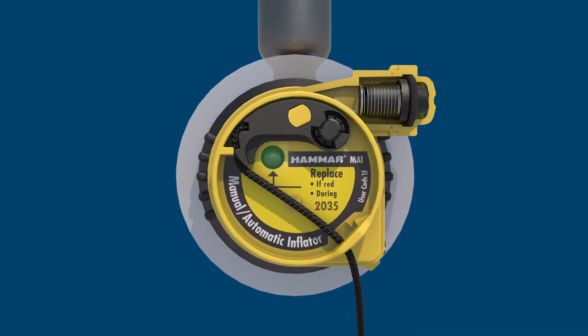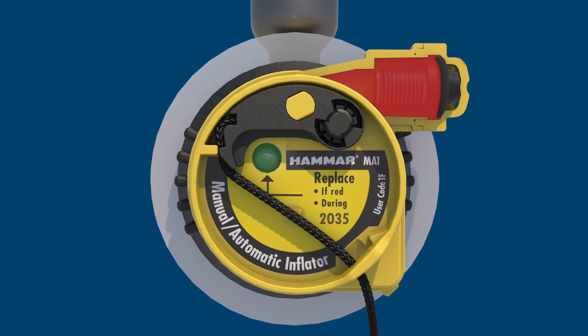Some air will always remain in a life jacket's bladder even after vacuum packing. When the life jacket is submerged, if the air pressure inside the bladder and the MA1's hydrostatic valve is equivalent to the surrounding water pressure, the valve remains closed and no water can enter.